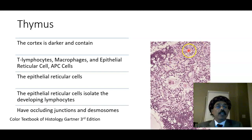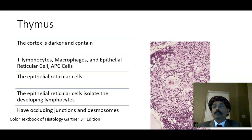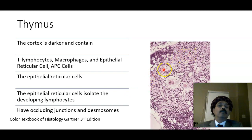There are different types of epithelial reticular cells, also called thymic epithelial cells. These cells originate from the third and fourth pharyngeal pouch of the developing embryo. The lymphocytes are mesodermal in development, while the epithelial reticular cells have connections by means of desmosomes and occluding junctions.